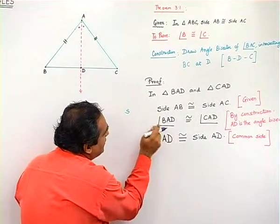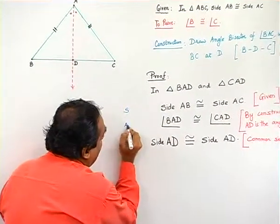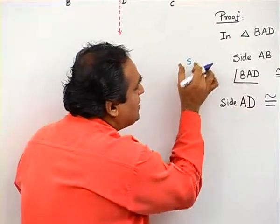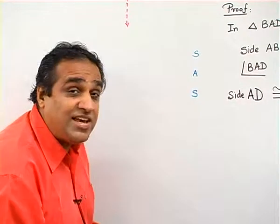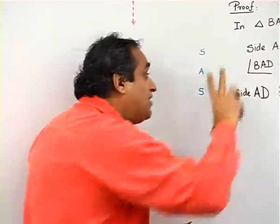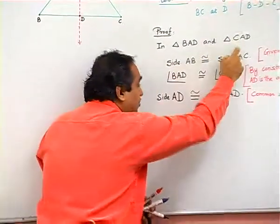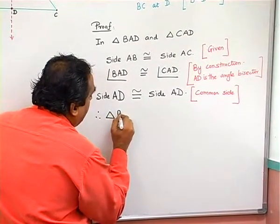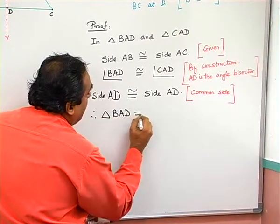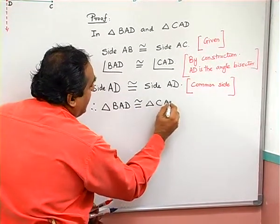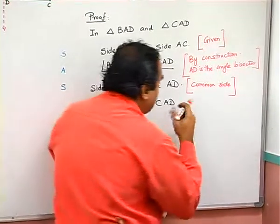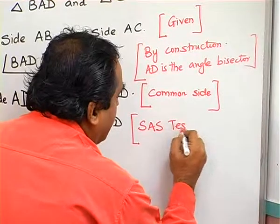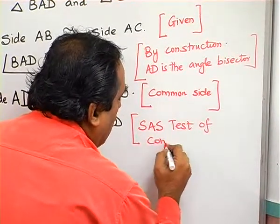You don't need to write this. I am just demonstrating to you. S-A-S. The use of S-A-S test of congruence. Now, these three conditions have been satisfied for these two triangles. Therefore, we will say, triangle BAD is congruent to triangle CAD. And what is the reason that we will write? It is the S-A-S test of congruence.